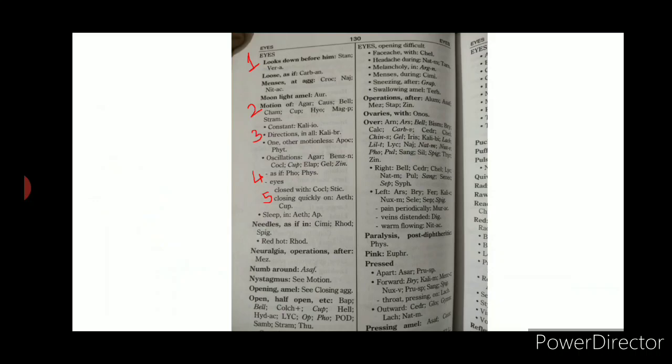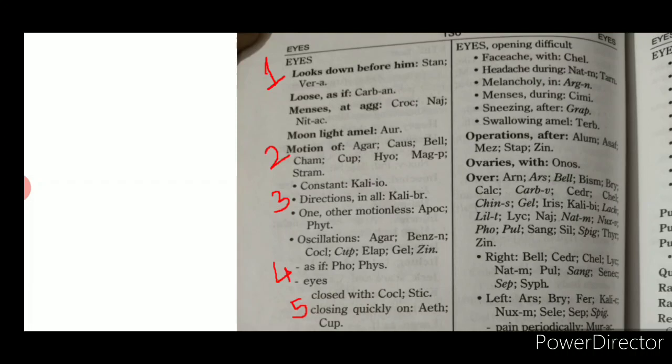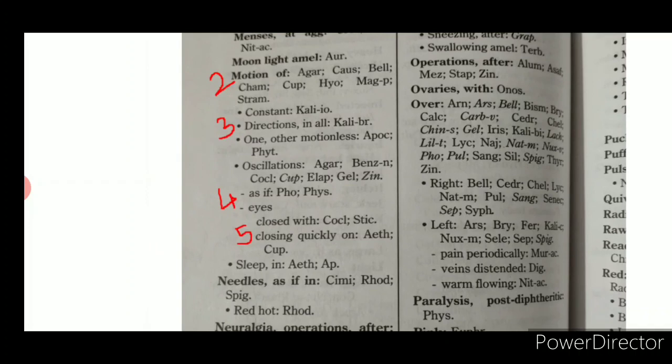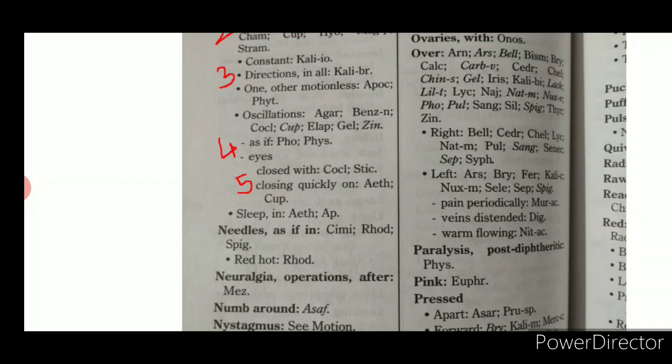Looking at an example: the first level rubric is 'Eyes,' the second level is 'Motion of,' the third level rubrics are denoted with a bullet dot — such as 'Constant direction' — the fourth level is denoted with a dash, and the fifth level rubrics have one space indent under the fourth level rubric.